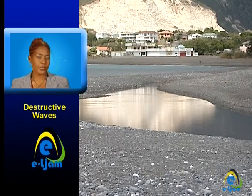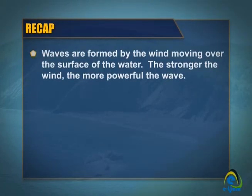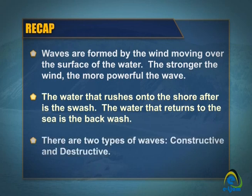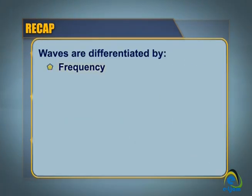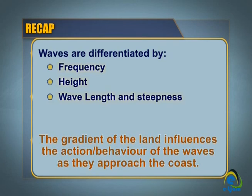Let's take a moment to review. Waves are formed by the wind moving over the surface of the water — the stronger the wind, the more powerful the waves. The body of water that rushes onto the shore after a wave crashes onto land is the swash. The body of water that returns to the sea is the backwash. There are two types of waves, constructive and destructive, and they are differentiated by their frequency, height, wavelength, and the steepness determined by the gradient of the land.